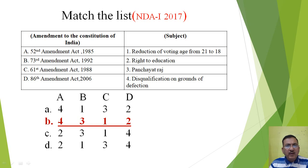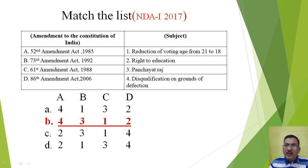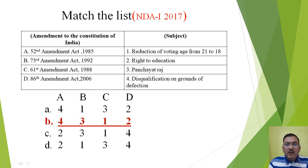The 61st Amendment Act, 1988 reduced the voting age from 21 to 18. Earlier, until 1988, only a person who had attained the age of 21 was eligible to cast a vote — the right of franchise. As per the 61st Amendment Act, the voting age was reduced from 21 to 18. Now any person, irrespective of caste, colour, creed, or culture, who has attained the age of 18 is entitled to cast their vote in Gram Panchayat, Nagar Parishat, Jilla Parishat, state government, or MP elections.